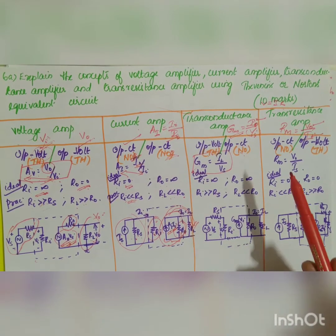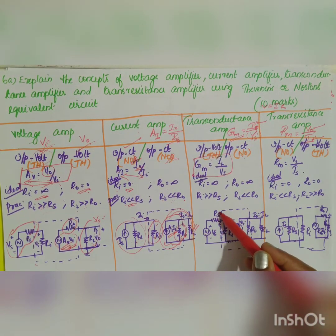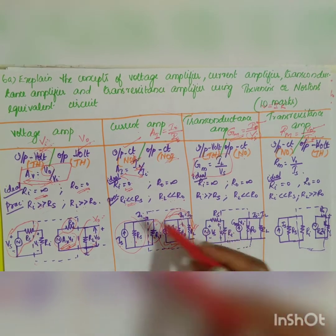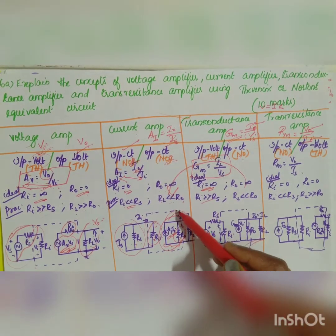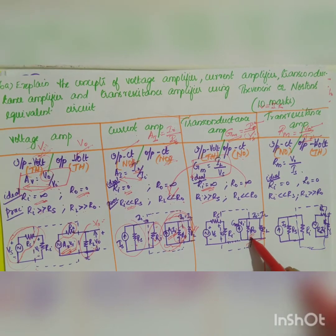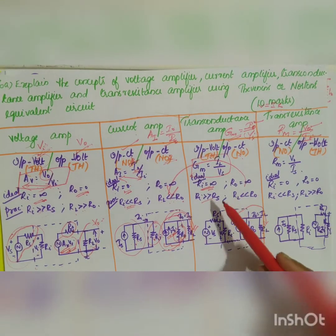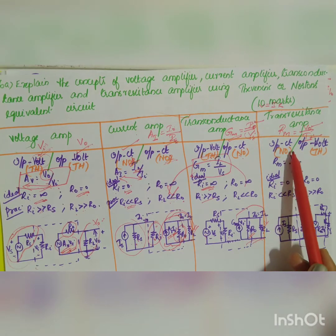For the transconductance amplifier, the input uses Thevenin's equivalent circuit and the output uses Norton's equivalent circuit. On the input side, you have a voltage source with Rs and Ri — similar to the voltage amplifier input — so Ri should be infinite. On the output side, similar to the current amplifier output, Ro should be very high so all the current flows through RL.